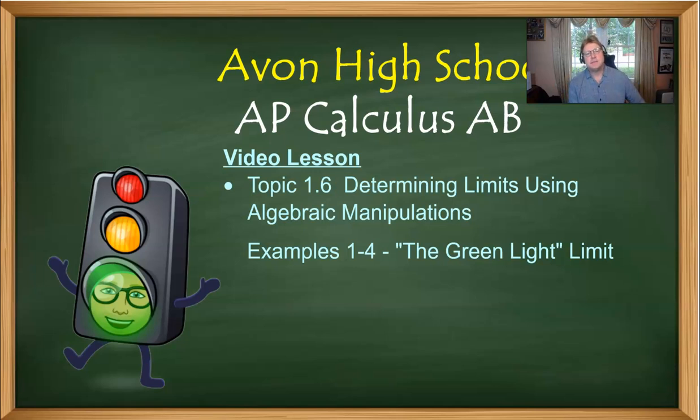Greetings once again, AP Calculus AB students. Mr. Record here, and we are going to finally start talking about how to find the value of a limit when you don't necessarily have a graph to rely on, and when you don't necessarily have a table or a calculator handy for that matter. And I like to affectionately call these the green light limits. And they're actually going to be quite easy, and I think you're going to have a pretty easy time with them.